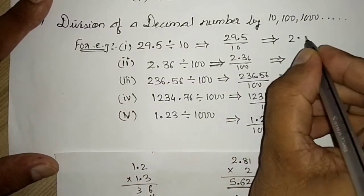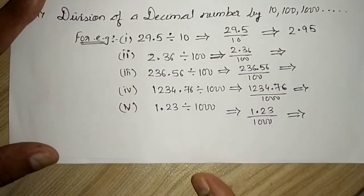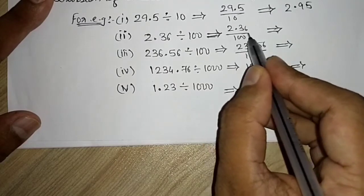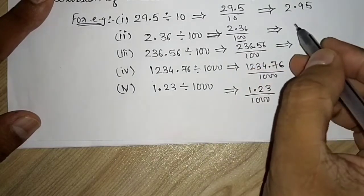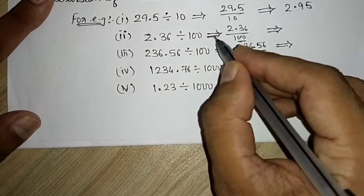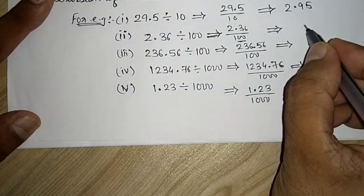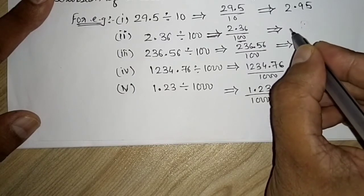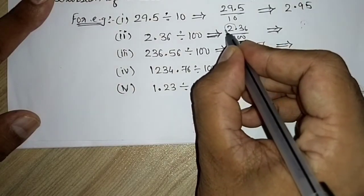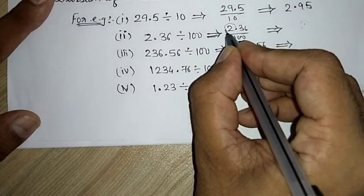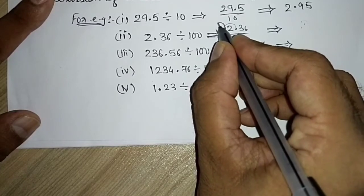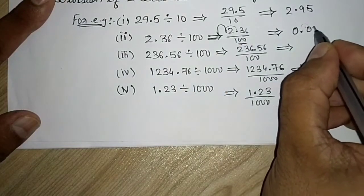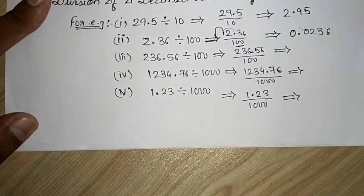For 2.36 ÷ 100: there are two zeros, so shift the decimal point two places to the left. Shifting once gives 0.2-something; shifting again gives 0.0236. So the answer is 0.0236.